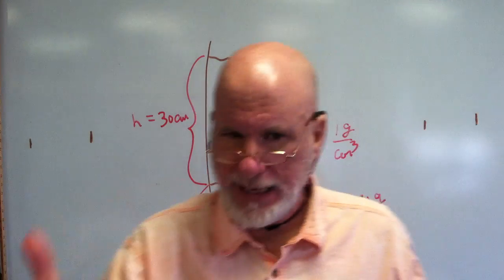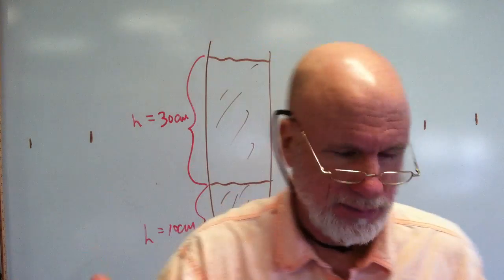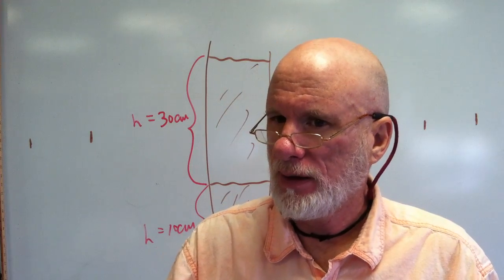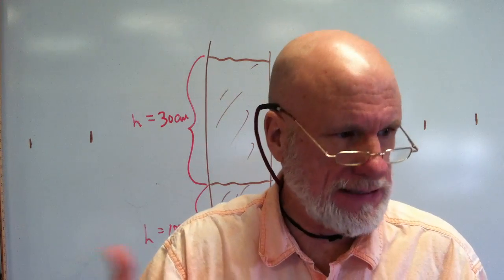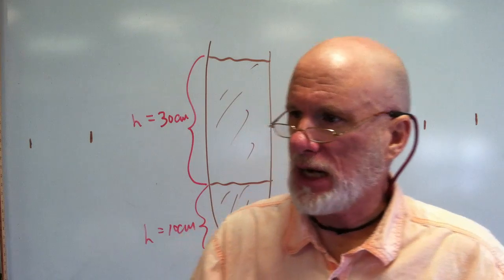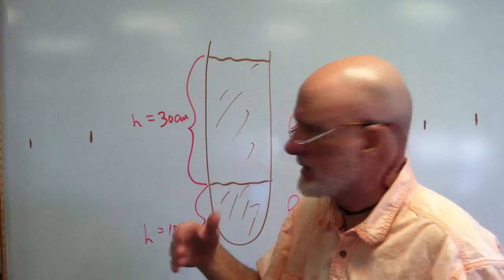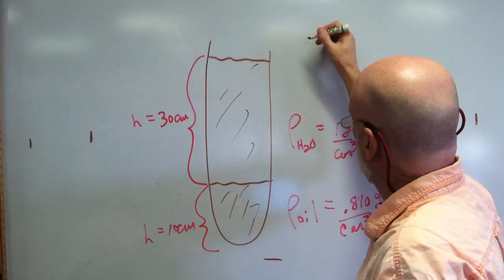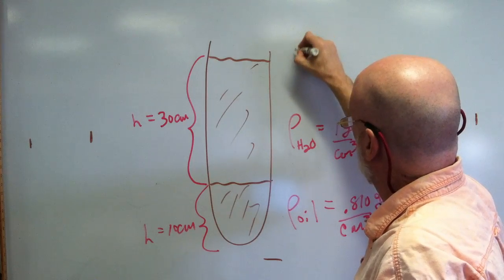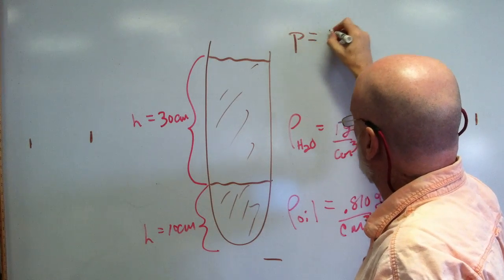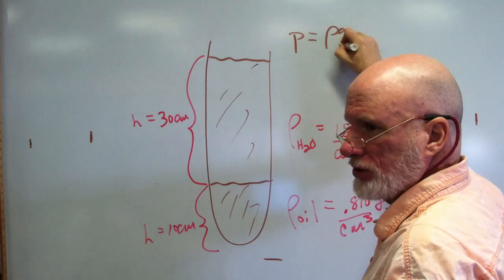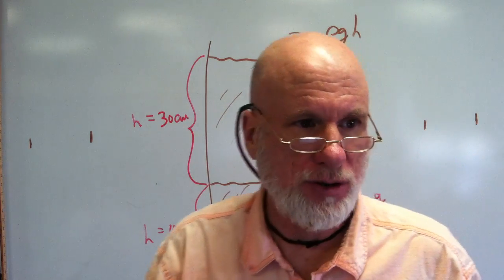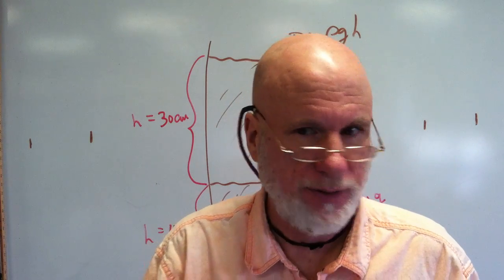The pressure inside a fluid is based on the height of the fluid and the density of the material. Pressure equals rho times g times h — that's the formula: P = ρgh.